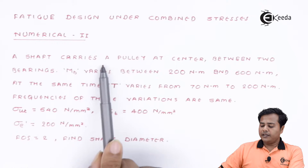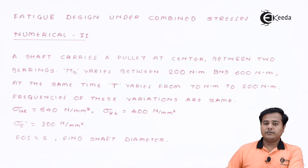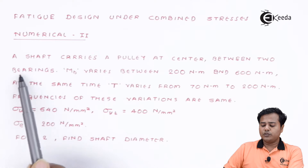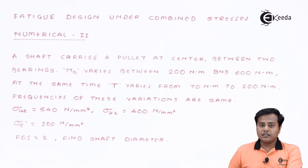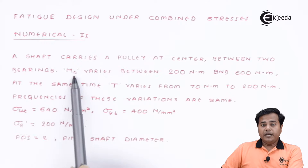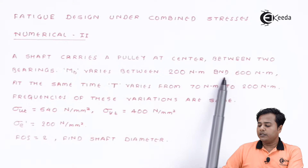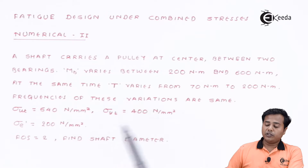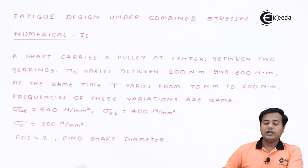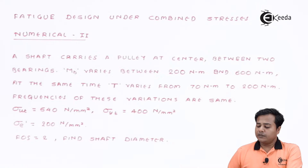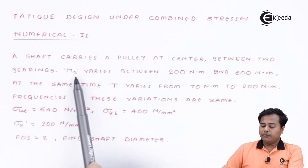It says that a shaft carries a pulley at center. There is a shaft and a pulley is mounted at the center between two bearings, so the shaft has two bearing ends as supports. The bending moment MB varies between 200 Nm and 600 Nm — those are the two extreme values. There is no axial load given in this problem.